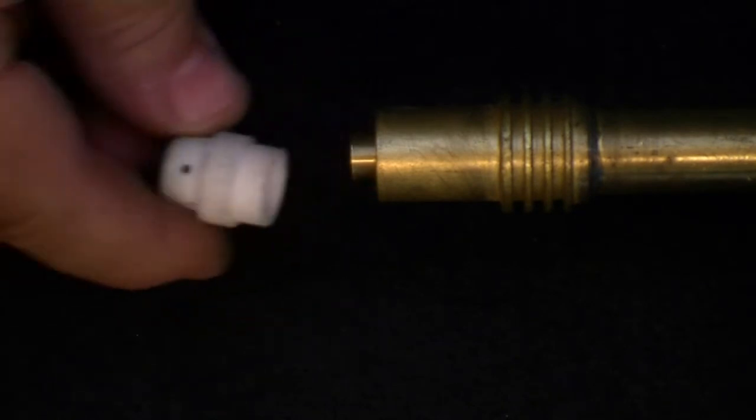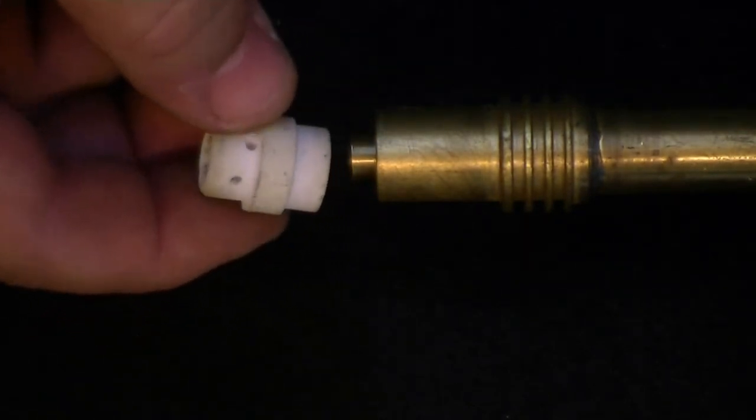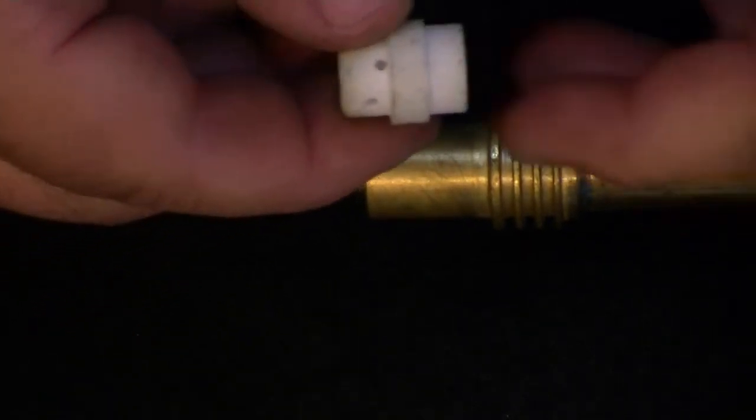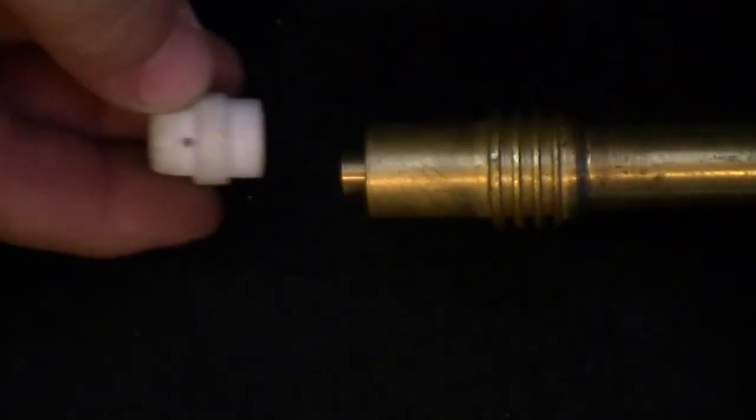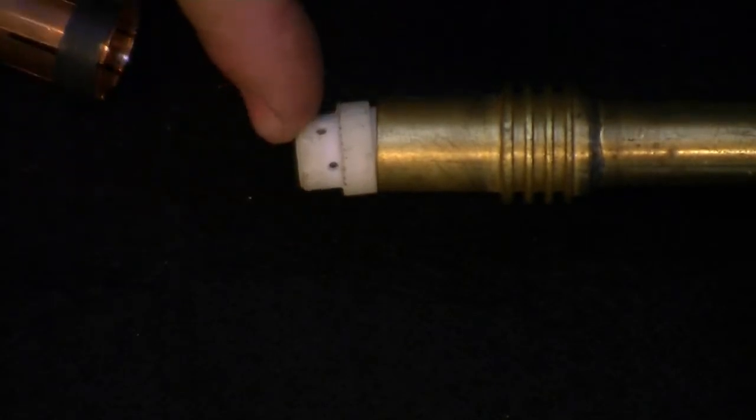Next we have the gas diffuser. This ceramic piece can be broken after it is removed. Do not force it on or off. When you are assembling the gas diffuser, make sure that the holes are pointing to the outside and not inside the housing.